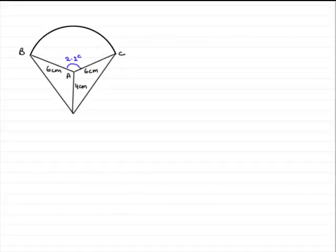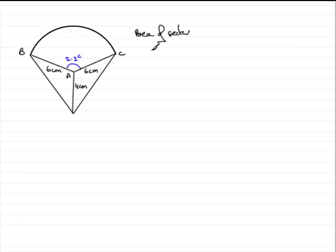Hi, now in this part of the question we're asked to find the area of this sector here, BAC. And in the usual way, the area of sector BAC is going to be equal to a fraction part of the area of this complete circle.